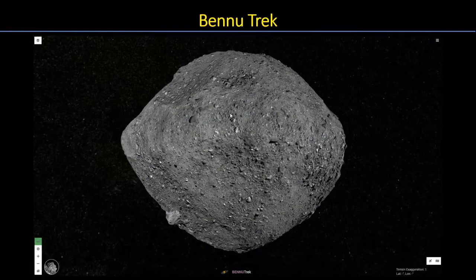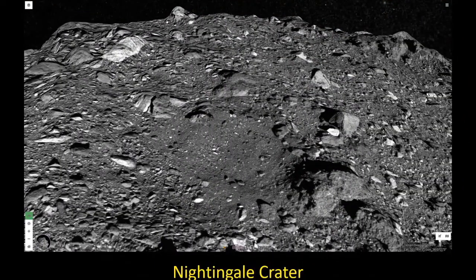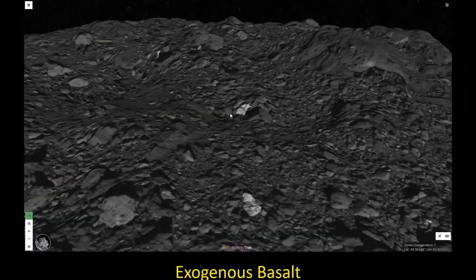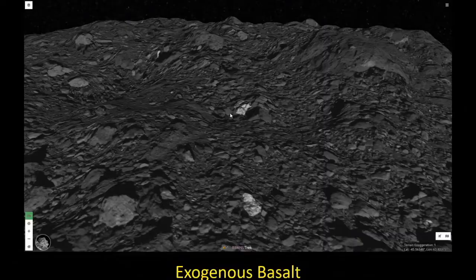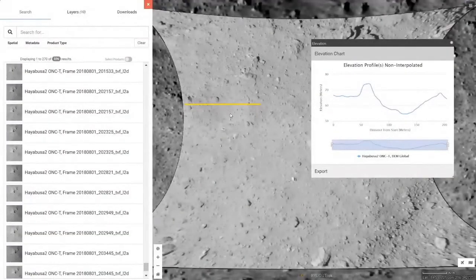Continuing our exploration of asteroids, we have the Bennu Trek portal, visiting the near-Earth asteroid Bennu — the subject of exploration by the OSIRIS-REx mission this past year. We can zoom down to the Nightingale Crater where OSIRIS-REx gathered its surface samples, and we can even see strange boulders — exogenous basalt whose spectral signature identifies them as fragments of Vesta that have landed on the surface of Bennu. We also have the Ryugu Trek portal for another near-Earth asteroid, a rubble pile visited by Japan's Hayabusa 2 mission, which returned samples from Ryugu's surface. You can examine data from the Hayabusa 2 mission in detail with the Ryugu Trek portal.